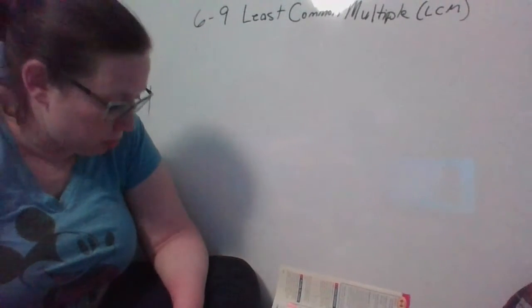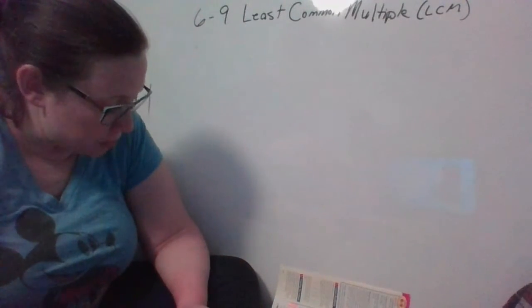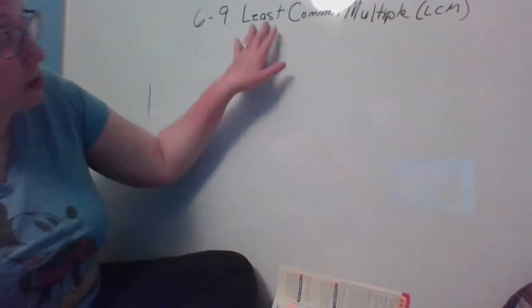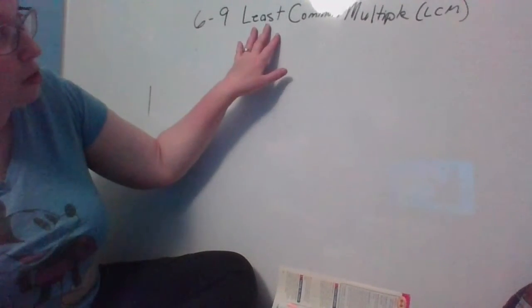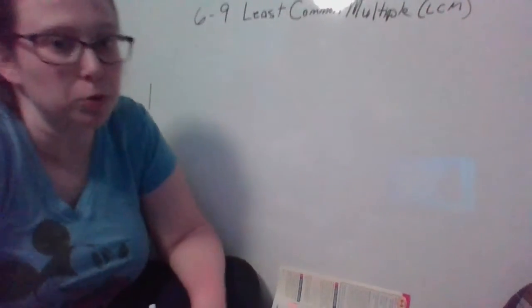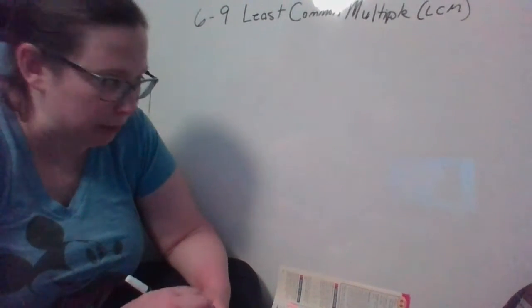Least common multiple is the smallest number that is a multiple of both or all of the numbers that you're talking about.